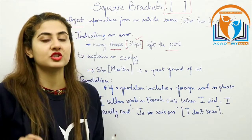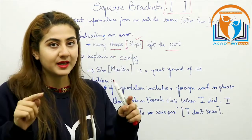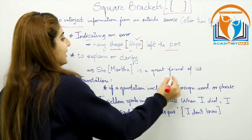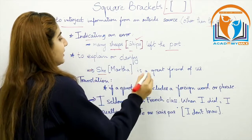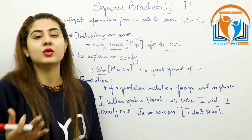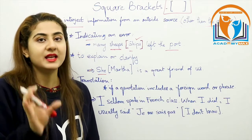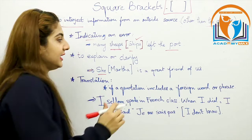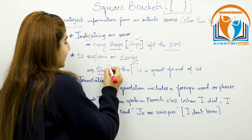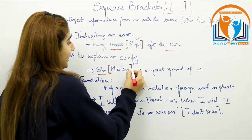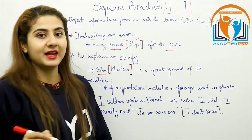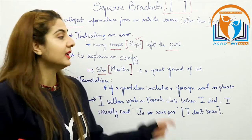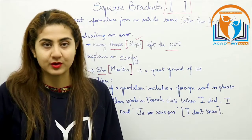When we write a clarification, we write square brackets. For example: 'She is a great friend of us' makes sense, but who exactly is 'she'? To clarify this, to explain this, the writer or editor wrote a square bracket with the actor's name in the text: 'Her name is Martha' — so 'Martha is a great friend of us.'